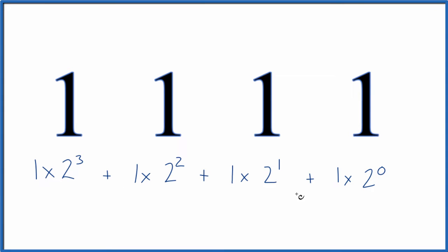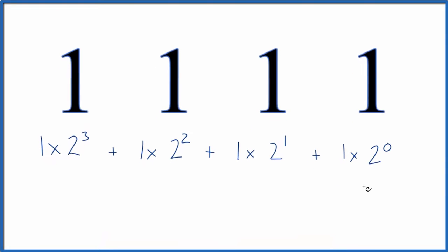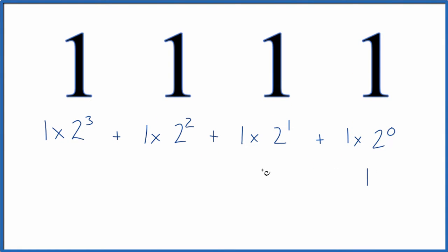Then we're going to get these numbers, add them all up. Whenever you have a number to the 0, that's just 1. So 1 times 1, 1 times 2. 2 squared is 4. So 1 times 4. And 2 to the 3rd is 2 times 2 times 2. So that's 1 times 8. That's 8.